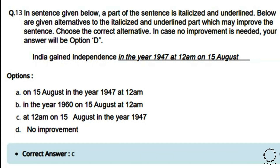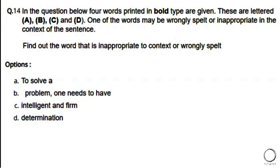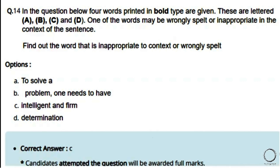Next: Find the word that is wrongly spelled or inappropriate in context. Sentence: 'To solve a problem, one needs to have intelligent and firm determination.' Options: a) to solve, b) problem, c) intelligent, d) determination. The right answer is option C — 'intelligent' should be 'intelligence.' This was noted as a wrong question, and candidates who attempted it were awarded full marks.